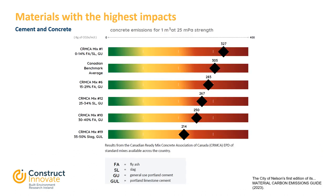This figure shows examples of different ready-mixed concrete mix designs with different cementitious materials. Ready-mixed concrete mix 1, which has 0.14% fly ash or slag with the rest generally Portland cement, has the highest CO2 emissions at 327 kg of CO2 per cubic metre of concrete, exceeding the Canadian benchmark value of 305. However, ready-mixed concrete number 19, which is between 35 and 50% slag with the balance of Portland limestone cement, has the lowest CO2 emissions at 214 kg of CO2 per cubic metre of concrete.